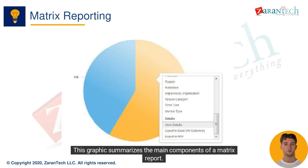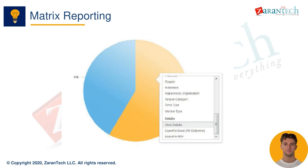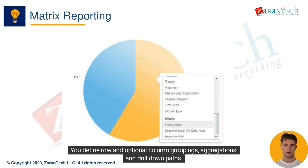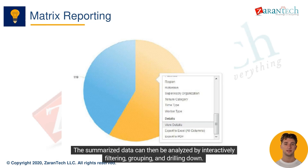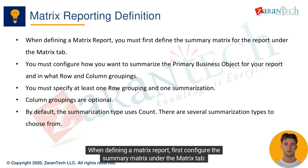This graphic summarizes the main components of a matrix report. You define row and optional column groupings, aggregations, and drill down paths. The summarized data can then be analyzed by interactively filtering, grouping, and drilling down.